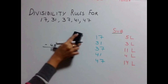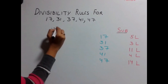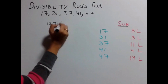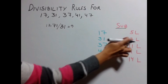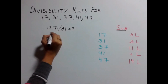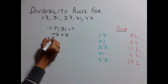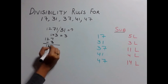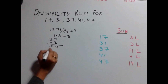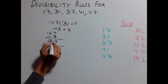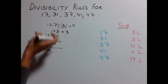Let's have another example. Take 1271 and find out whether it is divisible by 31 or not. For 31, multiply the last digit by 3. So 1 × 3 gives you 3. Subtract it from the remaining number: 127 − 3 gives you 124. Again, 4 × 3 gives you 12. Subtract it from the remaining number, which gives you 0. Because our answer is 0, our number is divisible by 31.